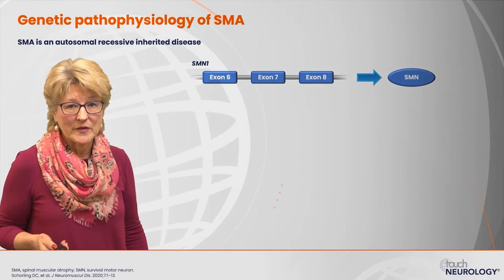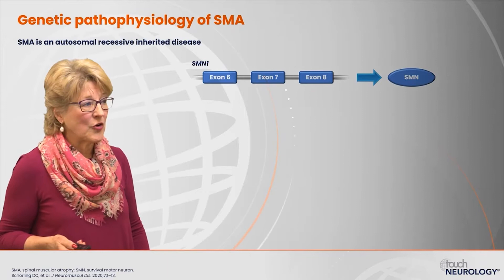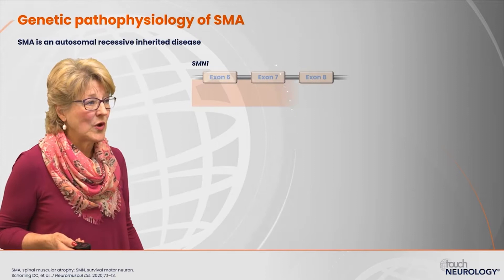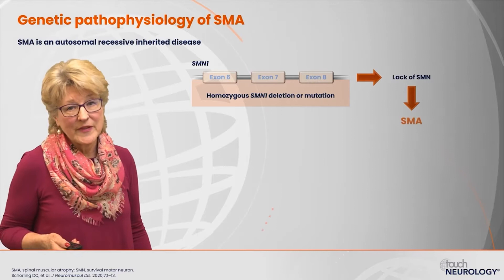All of us should have an SMN1 gene located on chromosome 5, and typically we produce SMN protein. But in patients who have a homozygous SMN1 deletion or mutation, they aren't producing any SMN protein, and this results in the disorder called spinal muscular atrophy.